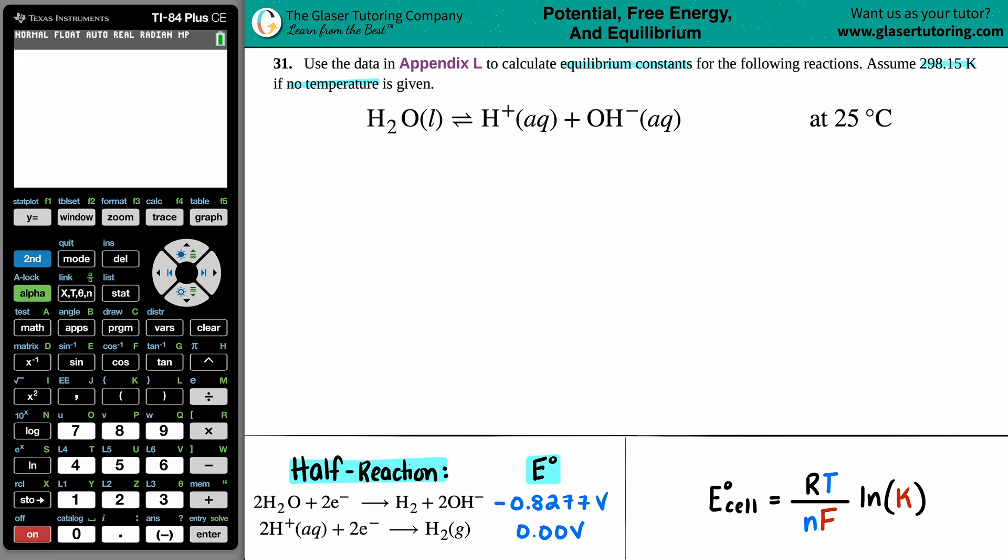And if we just quickly convert this temperature into Kelvin, Celsius to Kelvin is always just plus 273.15 if you want to be super exact. But 25 plus 273.15 is 298.15, so we're going to be using that number anyway.